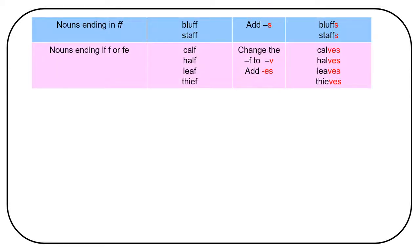Nouns ending in f or fe. Calf, half, leaf, thief. Change the f to v and add es. Calves, halves, leaves, thieves.